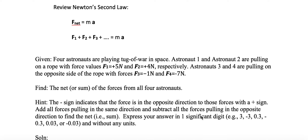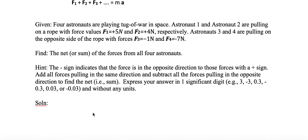Express your answer in one significant digit — for example, 3 or minus 3, or 0.3 or minus 0.3, or 0.03 or minus 0.03. In each case it's just one digit. For 0.3, we only count the 3. For 0.03, you only count the 3 — there are no zeros to the right of it — so it's just one digit. We're going to express our answer in one digit.